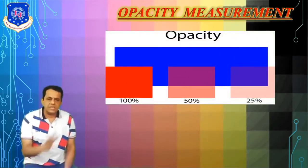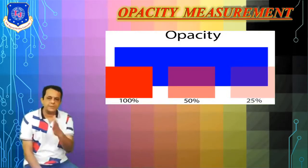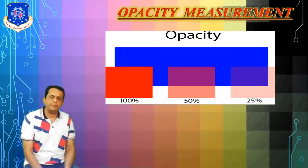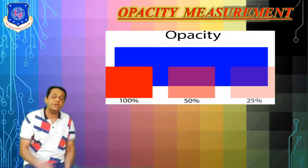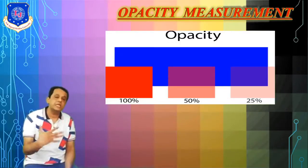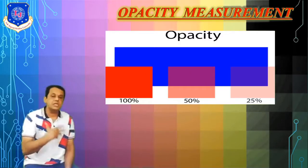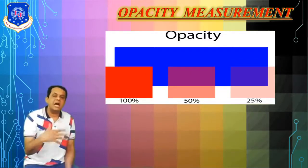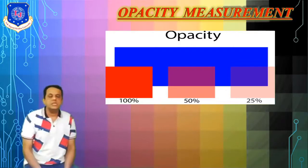Here I am showing you a graphical or visual illustration: 100% means you cannot see what is behind the red part; 50% means it is partially transparent; and at 25%, the blue background becomes more visible. As the opacity percentage decreases, the blue background can be seen in greater amounts.